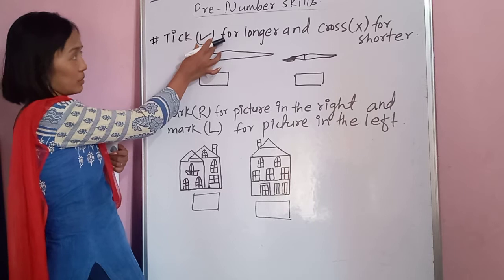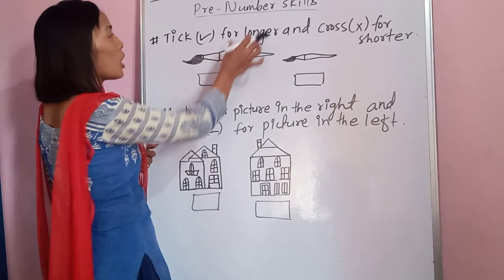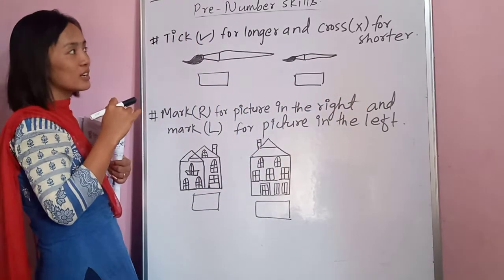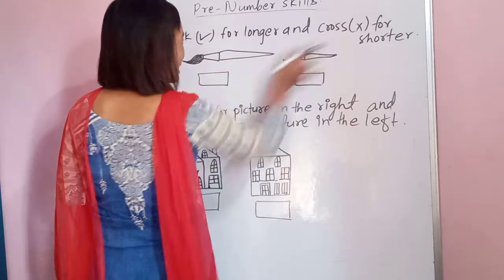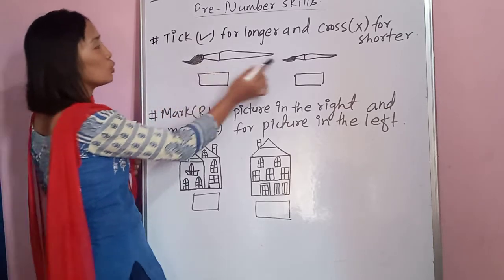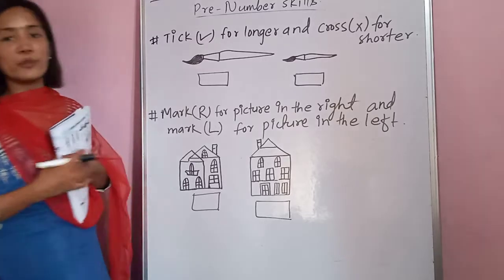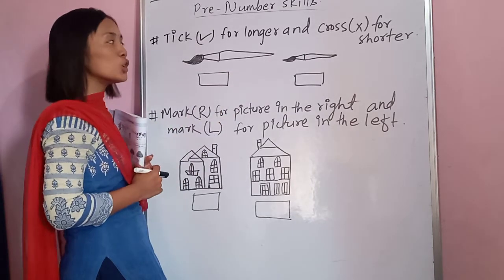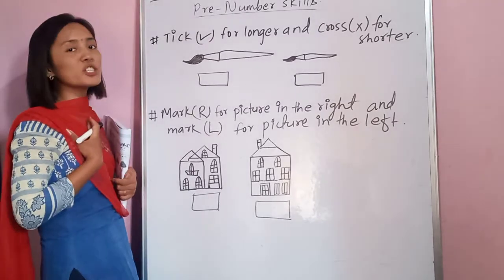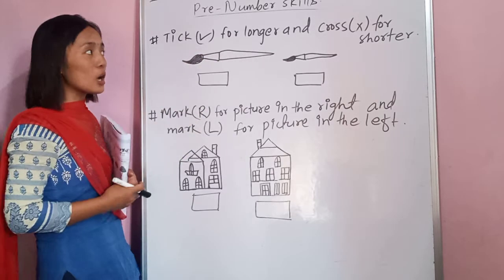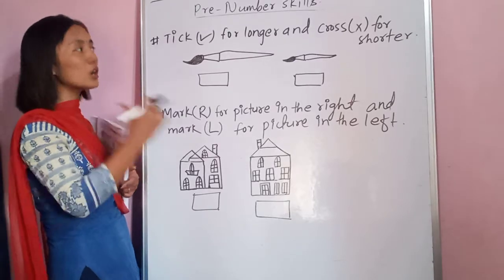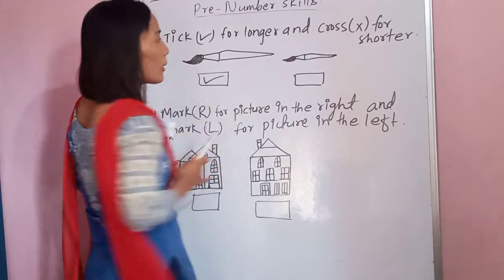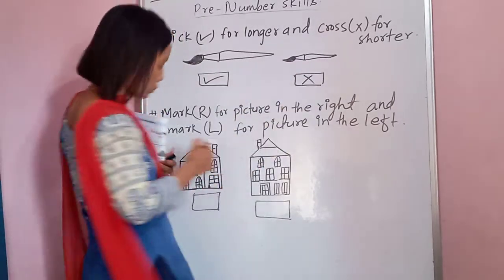The first question type: they will ask you to put a tick mark for the longer and a cross mark for the shorter. There are two figures and you have to identify which one is longer and which one is shorter. From my point of view, this one figure is longer — so I am putting a tick mark on this one. And for the shorter one, I am putting a cross mark.